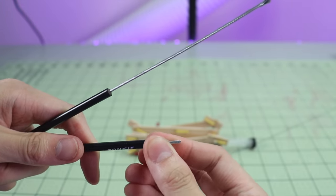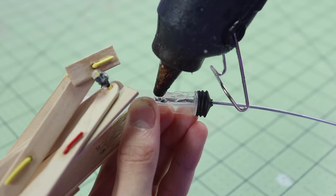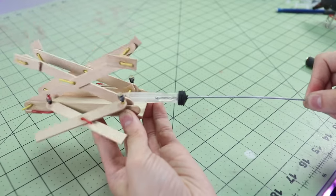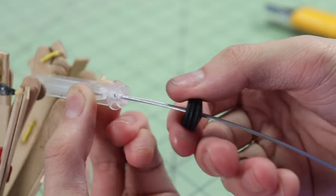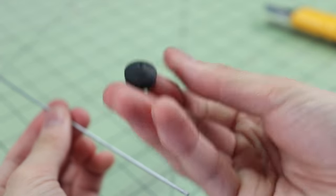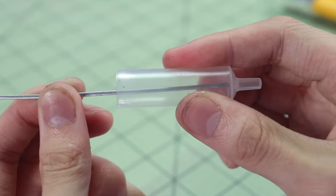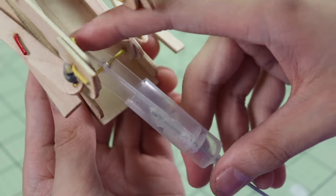This right here is a bike brake cable and housing. This is what's going to allow us to transfer the movement from one syringe to the other syringe. If you watched my last video, you'll know that I used this method on my Miles Morales mask, and that worked so well that I wanted to do it again here.